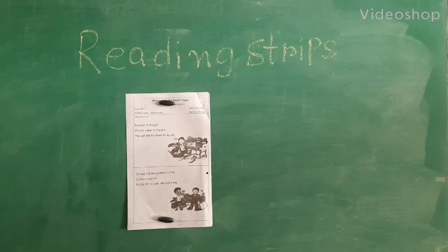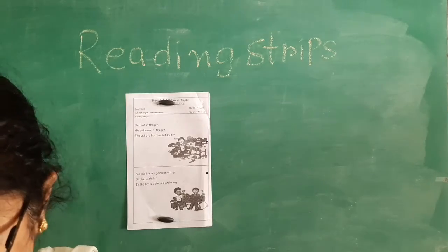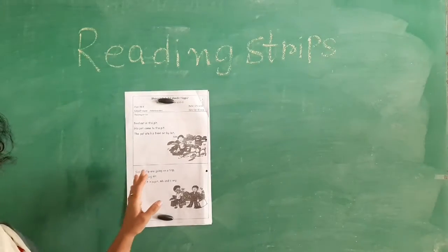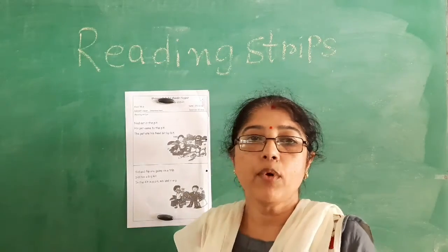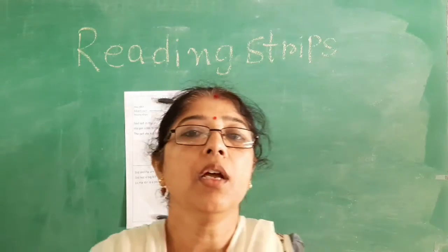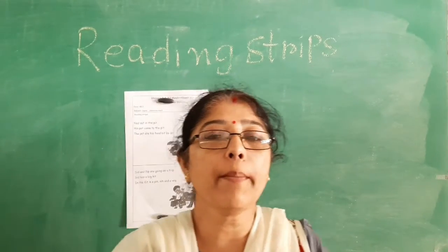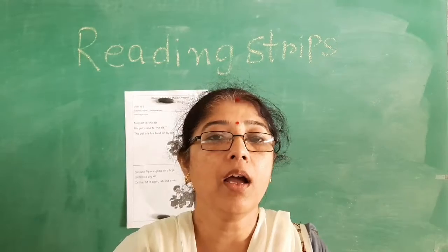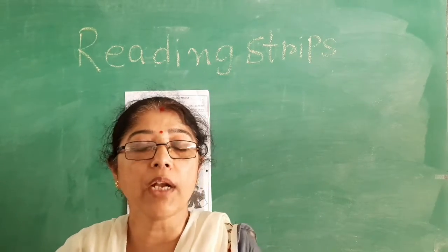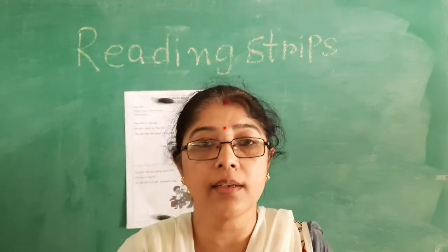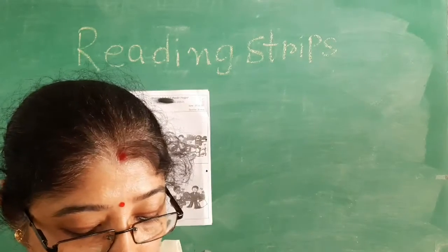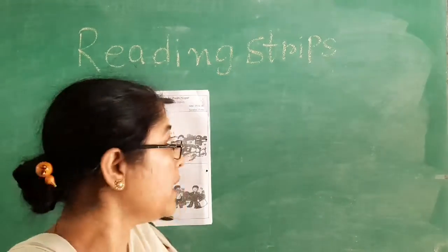So, children, let's start with reading strips. Today we will do reading strip. Children, before doing reading strip, aapko capital and small letter bahaat achche se anna chahiye. Jab tak aapko poora capital letter aur small letter panna nahin aayega, aapko reading kaise karoge — how you are going to read until and unless you recognize it. I hope everybody is doing the alphabet. So, let's start.